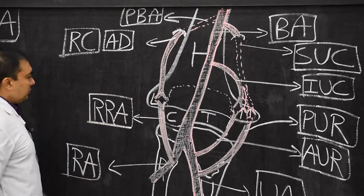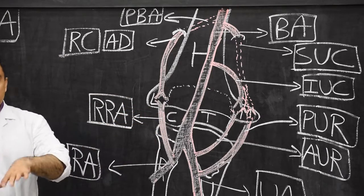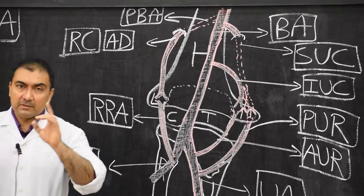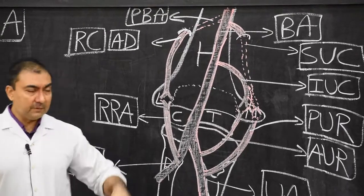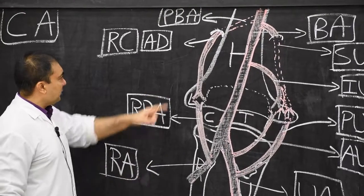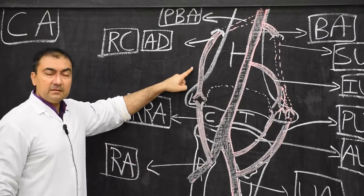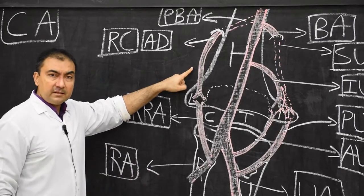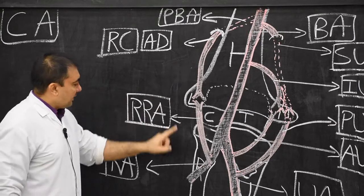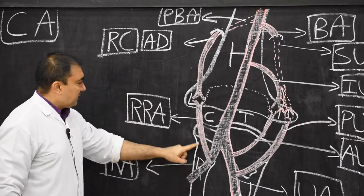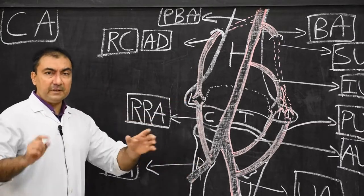So, anastomosis in front of the lateral epicondyle involves two arteries: from above, the anterior descending or radial collateral artery, which is a branch of the profunda brachial artery; and from below, the radial recurrent artery, which is a branch of the radial artery.